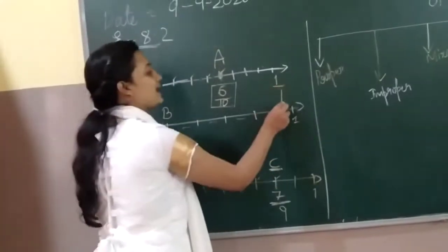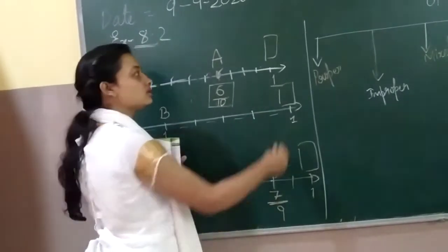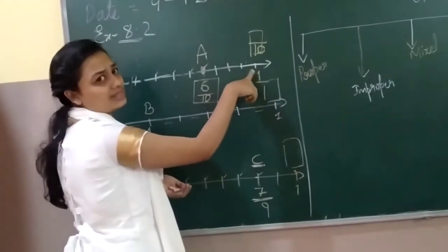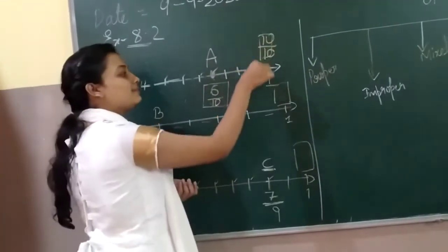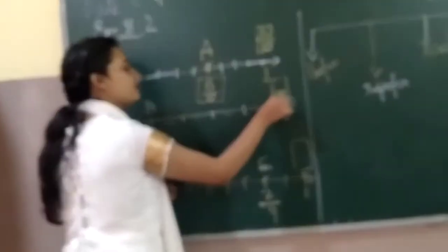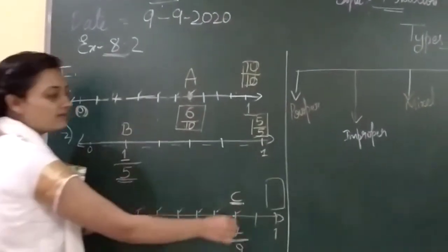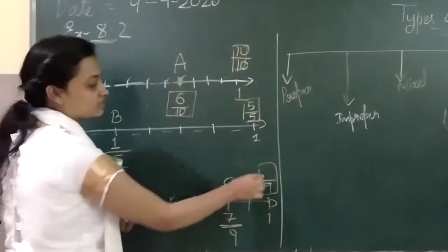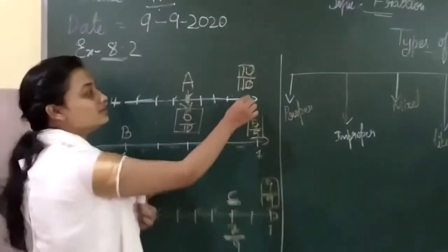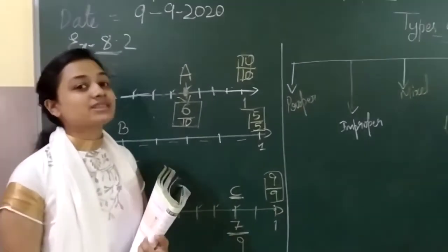And at the very end there is a blank. What should you write there? I know it is 10 parts total and this is my last line — it is 10 by 10, which equals 1. Similarly the second one has 5 parts, so the last line is 5 by 5. And for the third one, 9 parts, so it is 9 by 9. That is equal to 1. So children, we now know how to represent a fraction on a number line.